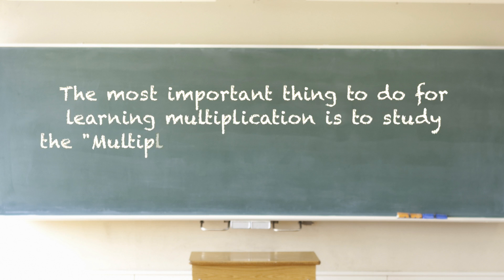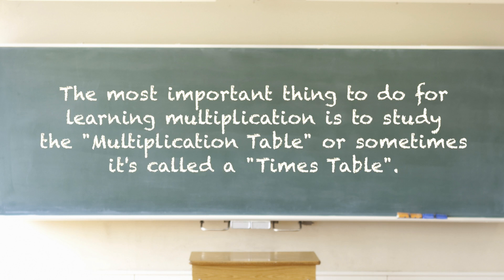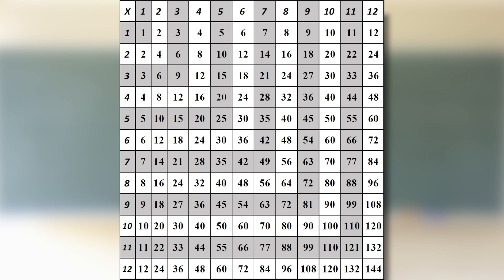The most important thing to do for learning multiplication is to study the multiplication table, sometimes called a times table. The following shows you a multiplication table and how to use it. Notice where the four in the left column meets the six in the top column — this tells you that four times six is equal to 24.